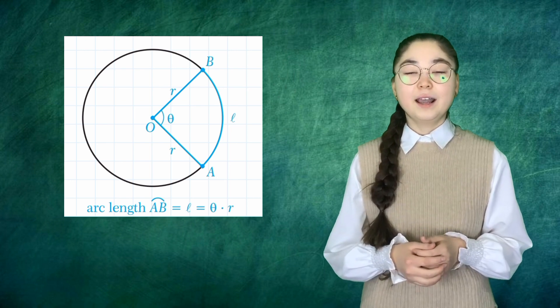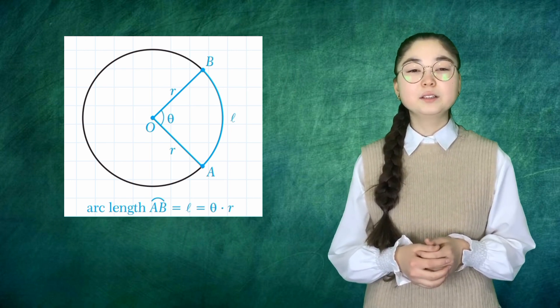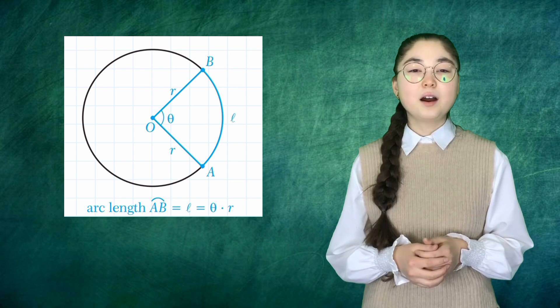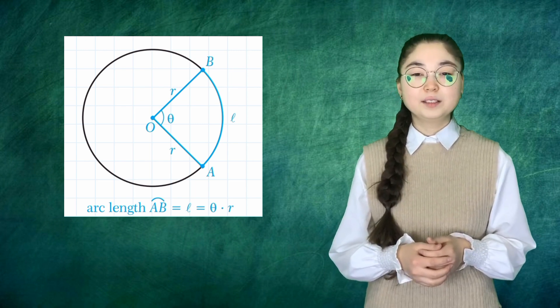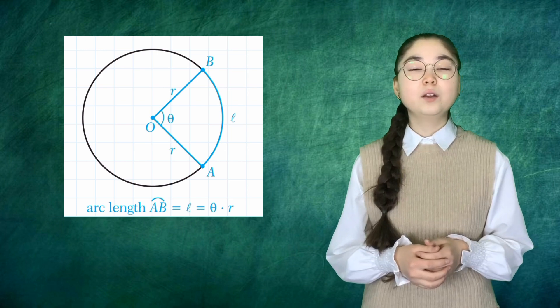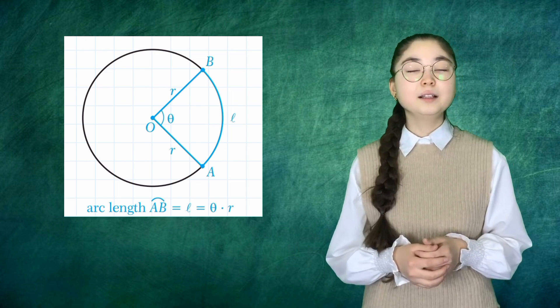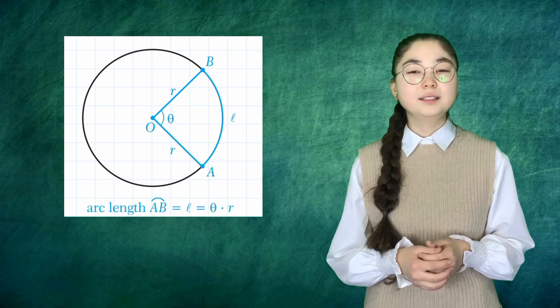In the figure, angle AOB equals θ and arc length AB equals l. So θ equals l over r, and l equals r multiplied by θ.